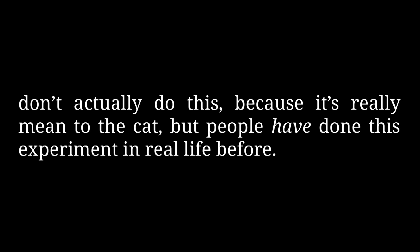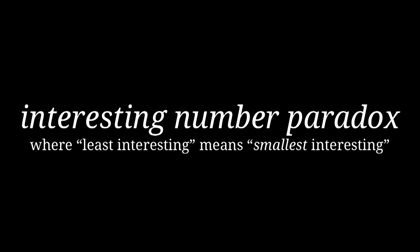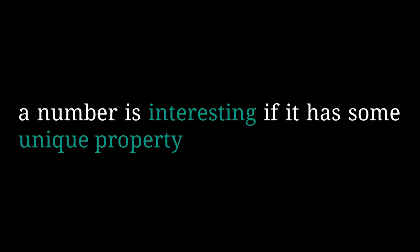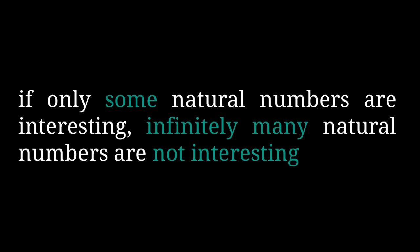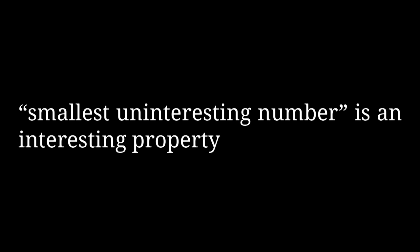There are infinitely many natural numbers. Some of them are interesting and others aren't. We can generally say a number is interesting if it has some unique property that sets it apart. If we assume that only some natural numbers are interesting, then there is an infinite set of natural numbers that aren't interesting. And in this set, one number must be the smallest uninteresting number — which is a pretty interesting property, making it an interesting number. This paradox is normally presented as a joke, the punchline being that this contradiction implies all numbers must be interesting.